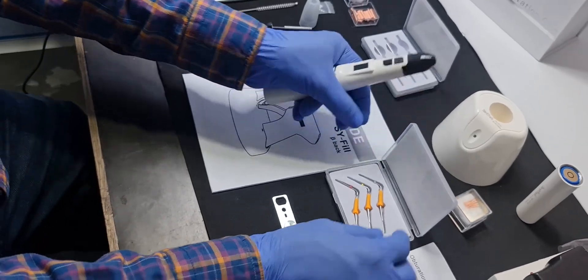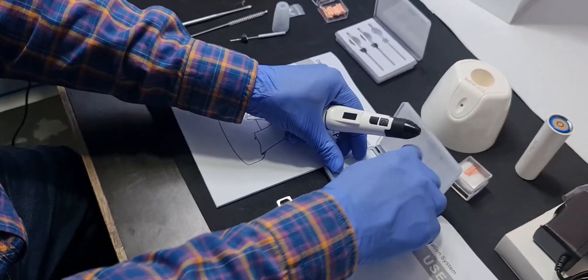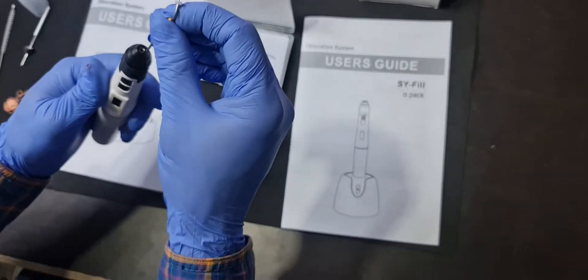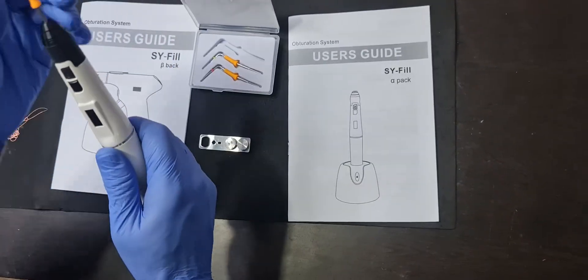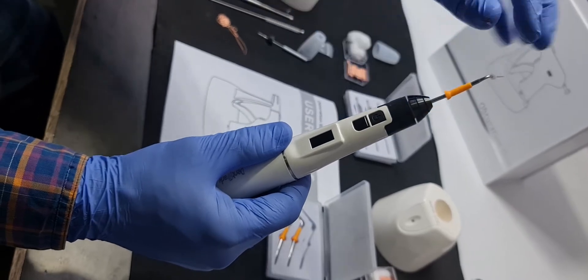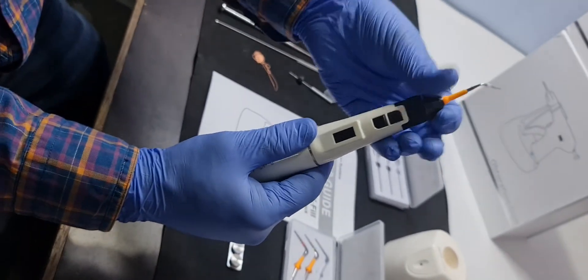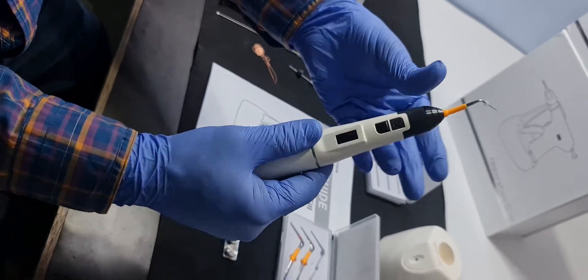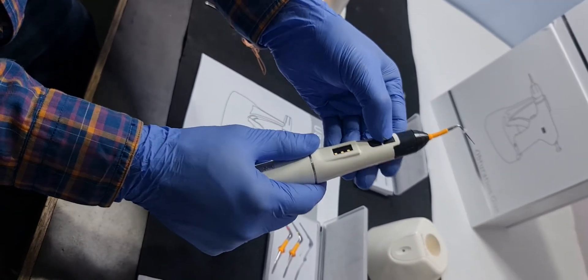So also obturation pen comes with 3 plungers. You can use white, yellow or red according to your requirement. So just loosen this. It will go inside. Tighten it. Switch it on.